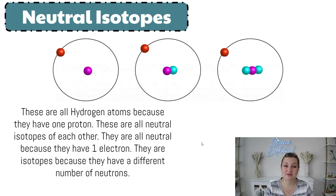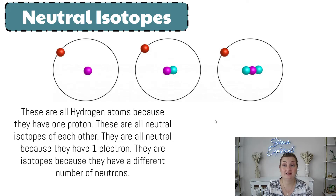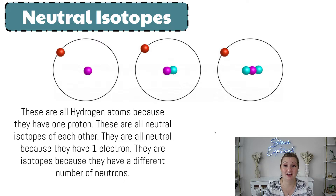If you look at these three atoms, they are all hydrogen. However, they're different. In fact, we call them isotopes of one another. I can tell they're hydrogen because they have one proton in the middle and their number of neutrons change — so we don't have any, then we have one and then we have two. Same number of protons, different number of neutrons, which means that their mass number is changing as well.